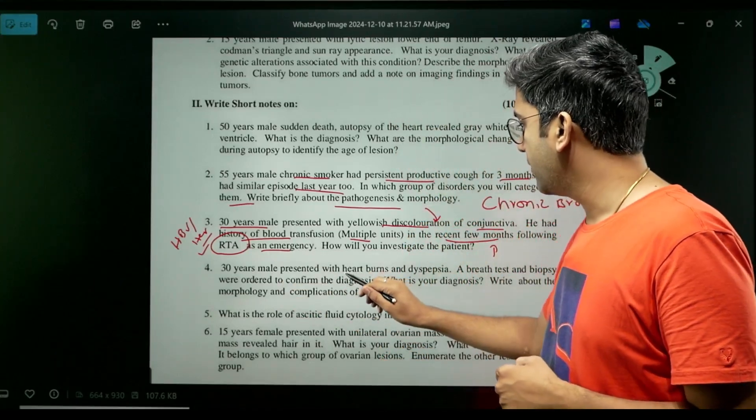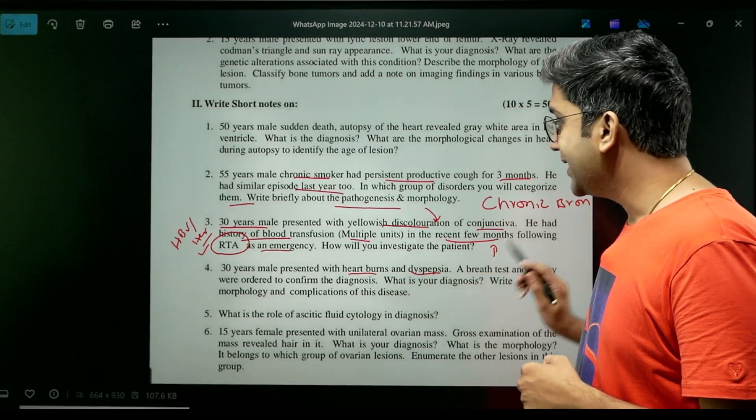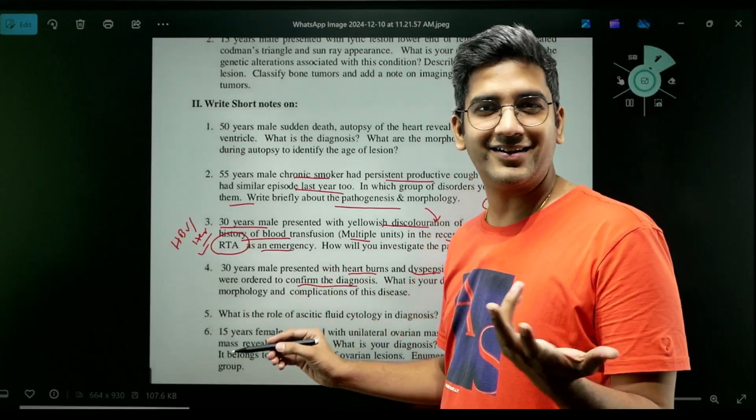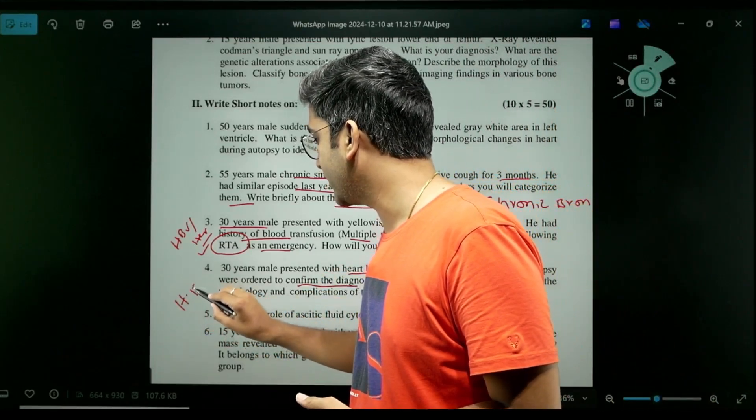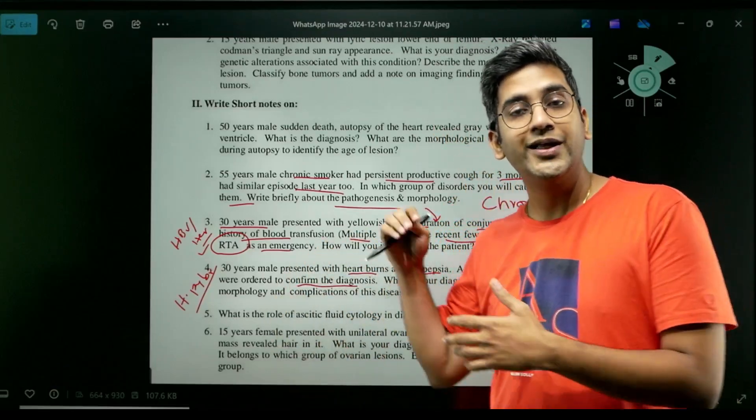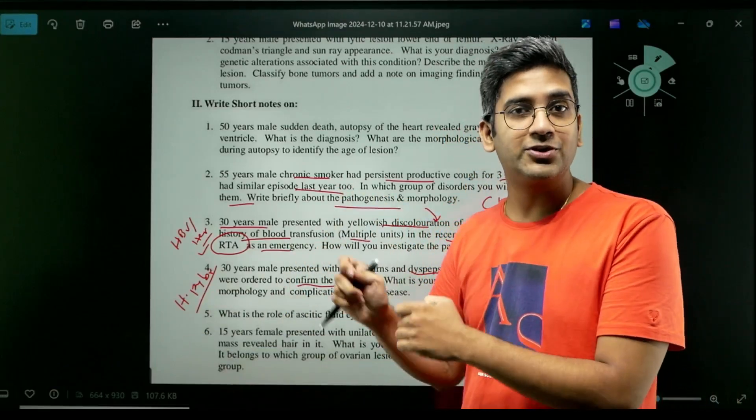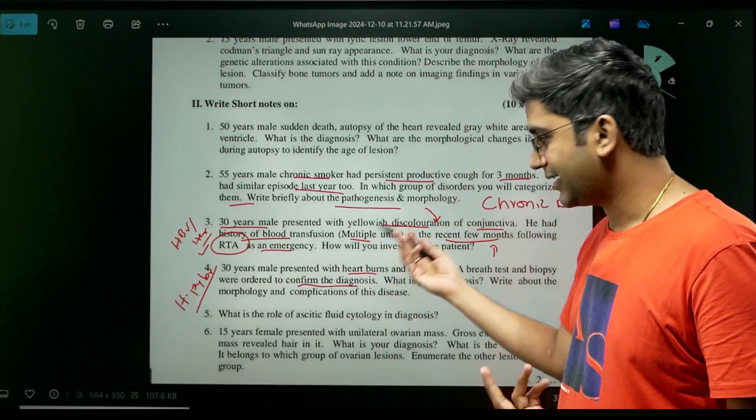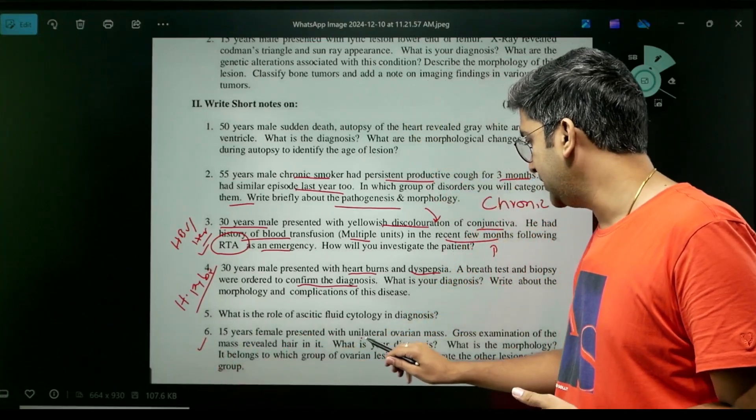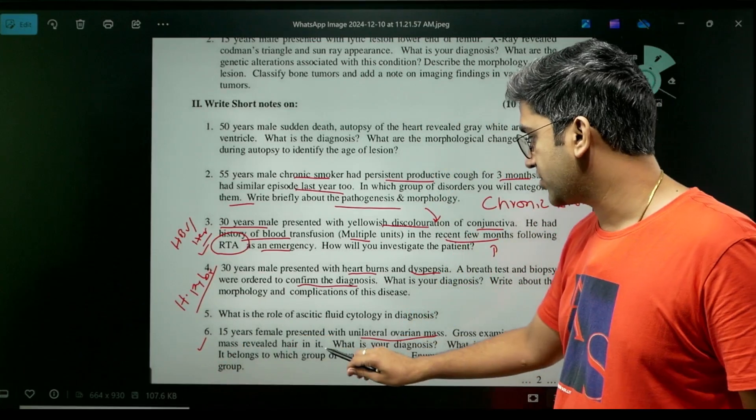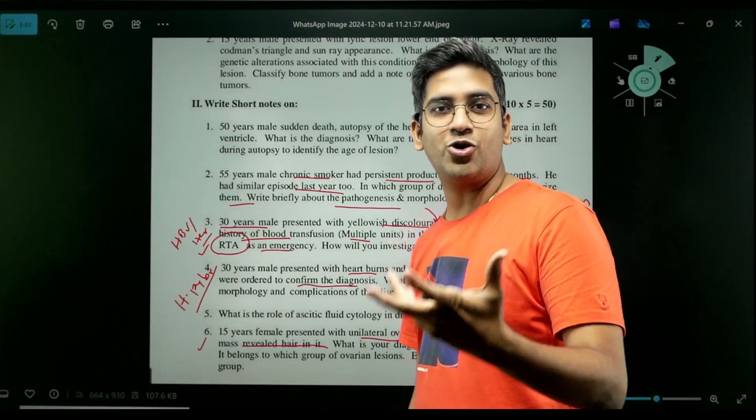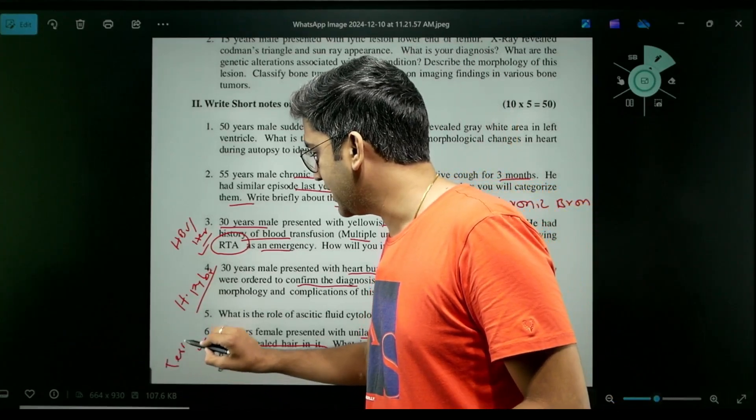Next: 30-year-old person present with heartburn, dyspepsia. Breath test was confirmed for the diagnosis. What's your diagnosis? Breath test - that's classical H. pylori gastritis. So it's a classical case of H. pylori gastritis. Urease breath test is the breath test which you're talking about. Take inputs both from microbiology and pathology before writing this answer. Next, ascitic fluid surgery - I'm going to ignore it. Last one is a clinical scenario again: 15-year-old female present with unilateral ovarian mass. Gross examination revealed hair, epidermis, dermis, teeth. All the three components is a classical case of a teratoma. That's a classical case of a teratoma.